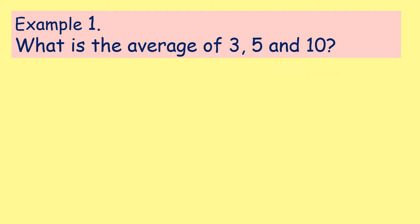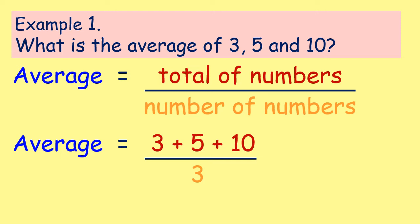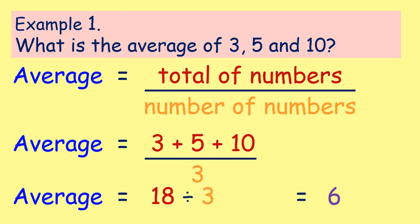Our first example is: what is the average of 3, 5, and 10? The average is the total of our numbers divided by the number of numbers we have. The total is 3 plus 5 plus 10, and the number of numbers is 1, 2, 3 — we've got three different numbers. So our average is 3 plus 5 plus 10 divided by 3. That gives us a total of 18, then 18 divided by 3 gives us 6. So our average is 6.